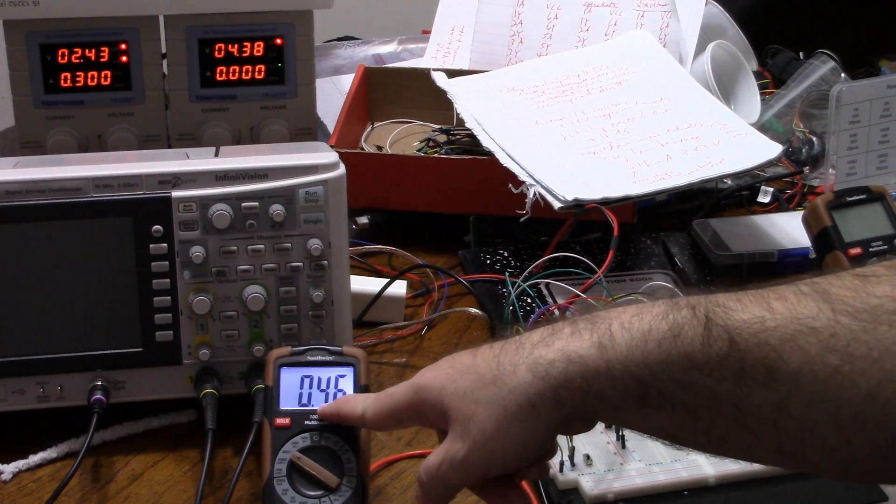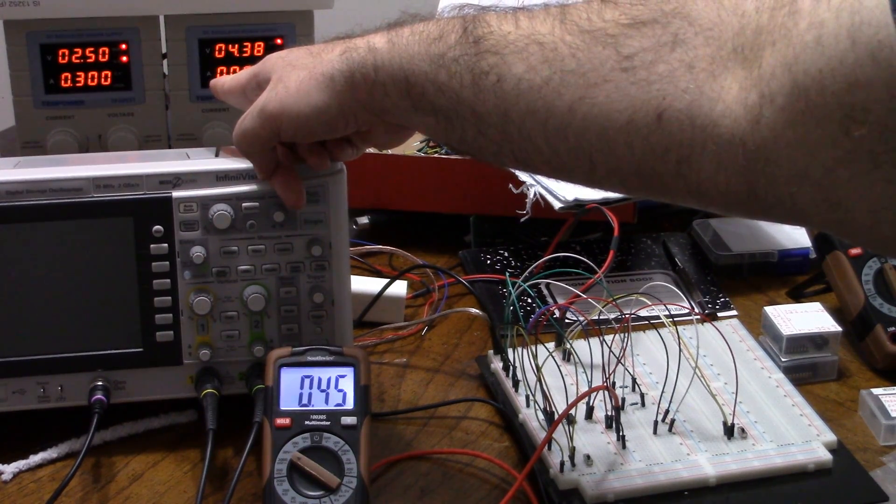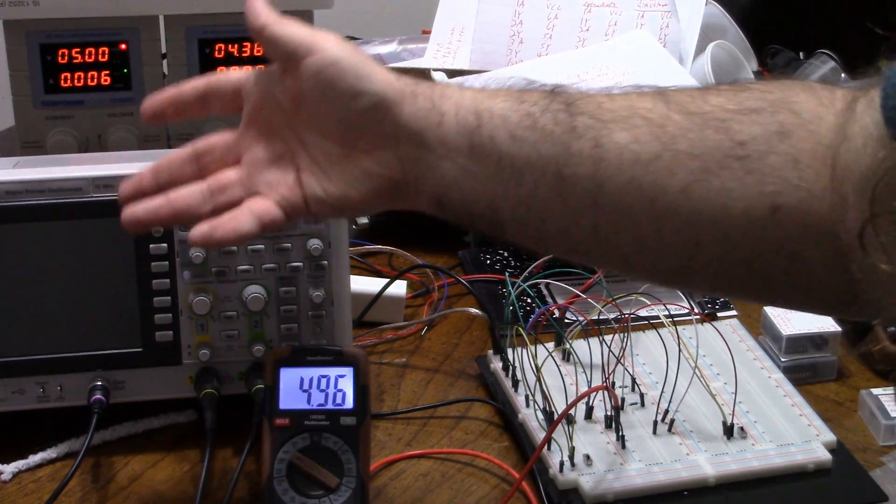What about low? Low is 0.46 volts on the meter, and the supply is pegging at 2.5 volts, putting out 300 milliamps, because that's the limit I've set. So what in the world?